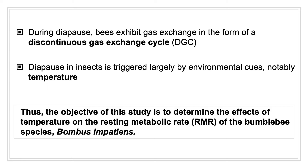During this time, energy consumption is low and stress tolerance is increased. Further, CO2 is released through the controlled opening and closing of spiracles, creating peaks in CO2 production.